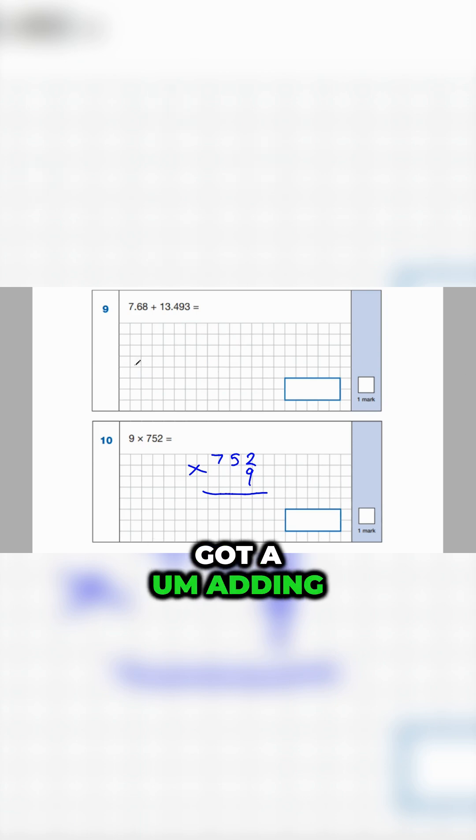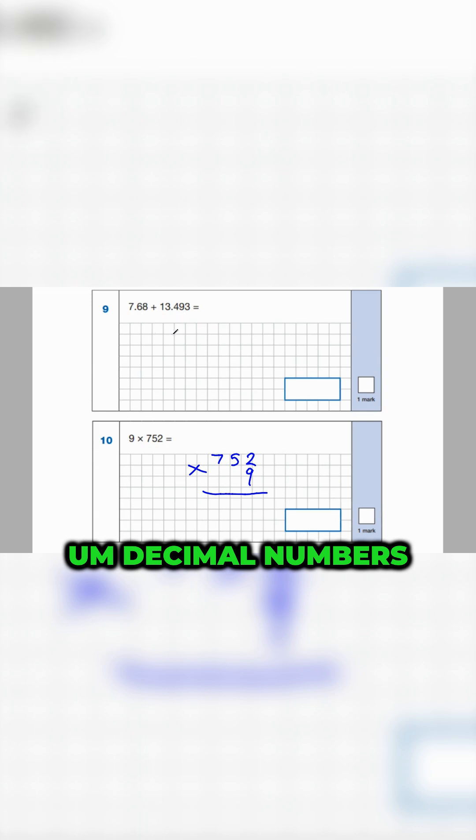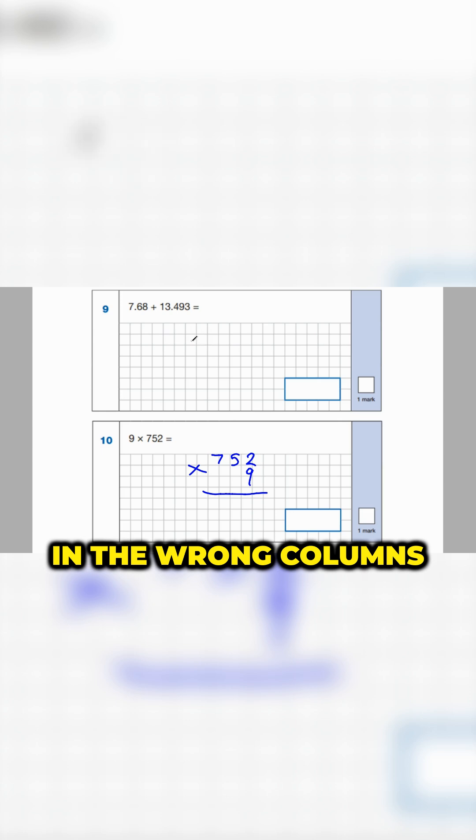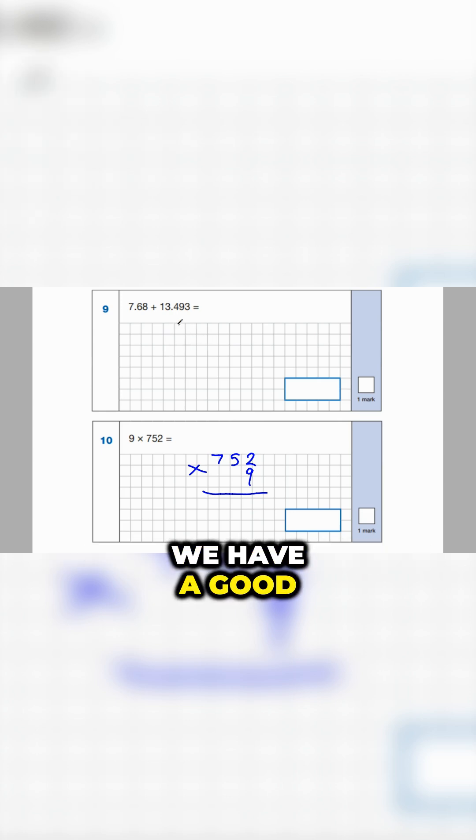So number nine, we've got an adding question here. However, we have decimal numbers, so the one mistake I see a lot of students make with this type of question is they put the numbers in the wrong places, in the wrong columns. So if we get that bit right, we have a standard good chance of answering it correctly.